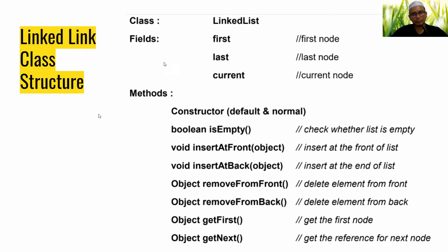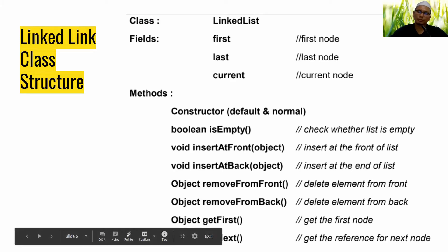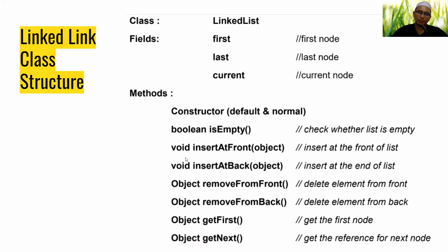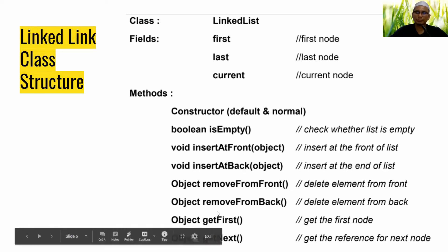Looking at the LinkedList class structure, there are three fields: first, last, and current, all of type Node. The methods include a constructor, isEmpty to check whether the list is empty, and operations such as insertAtFront, insertAtBack, removeFromFront, removeFromBack, getFirst, and getNext.